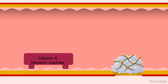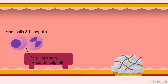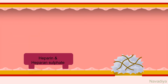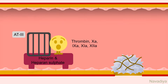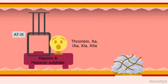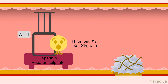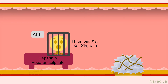Next, heparin and heparansulfate. Heparansulfate is found on the surface of endothelium, and heparin is released from mast cells and basophils. They both have little or no anticoagulant activity of their own. However, they help antithrombin-3 in inhibiting thrombin and other factors — they provide a platform for antithrombin-3 and clotting factors to come closer and cause conformational changes in the antithrombin-3 molecule which expose its active site.